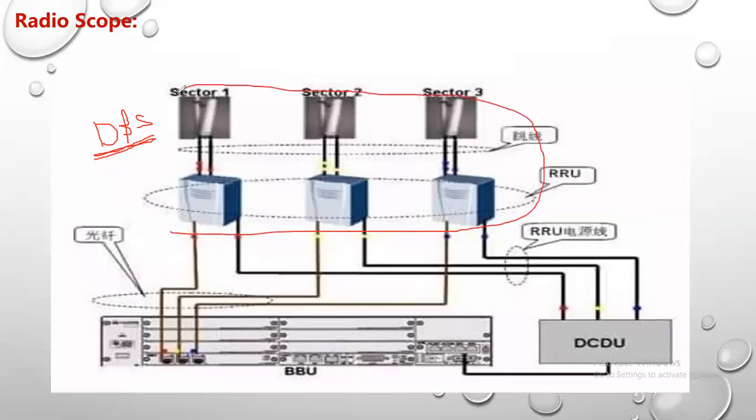So as we described, these antennas and RF modules or RRUs are placed on the tower. And this BBU, this DCDU, in cabinet, on ground in the site.